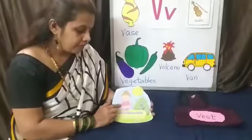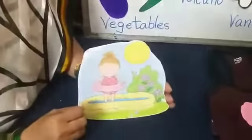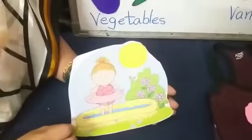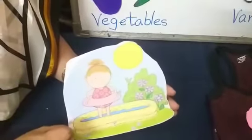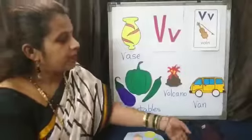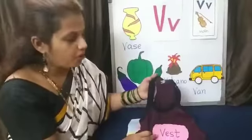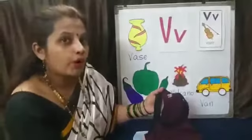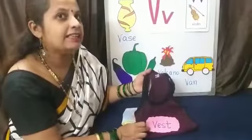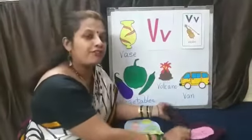See this girl, she is playing. She is on her vacation. V for vacation. This is a vest. V for vest. Boys wear it inside the shirt. V for vest.